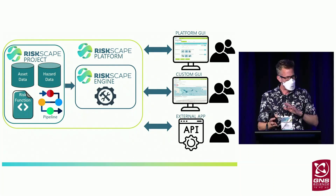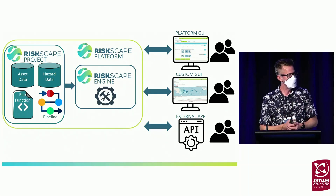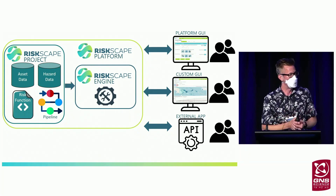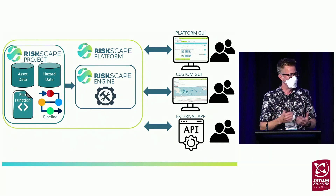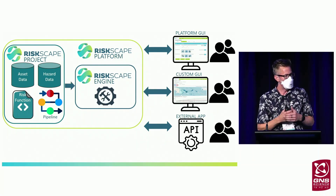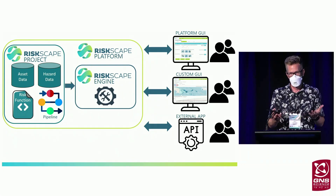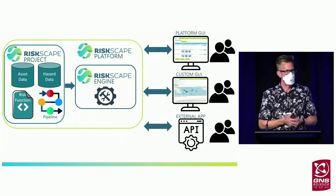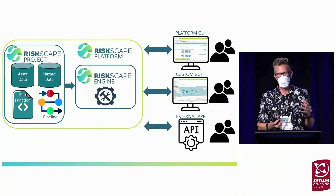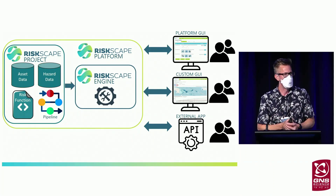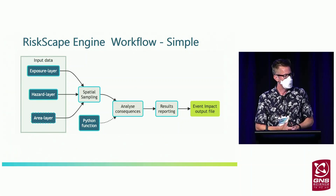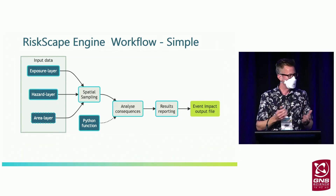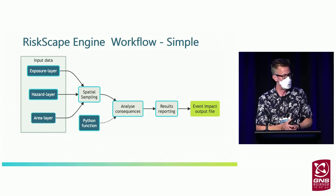Not everyone wants to interact through a command line interface, so we have the RiskScape platform — a web-based solution hosted in the cloud where people can build projects, run models, and access data from different sources, interacting through a graphical user interface in a normal web browser. You can also design custom interfaces for different users, and programming interfaces allow people to build the RiskScape model into their external systems, so you don't need to run it by yourself. The core workflow involves spatial sampling of different data sources, consequence analysis, and reporting outputs in different formats for different needs.